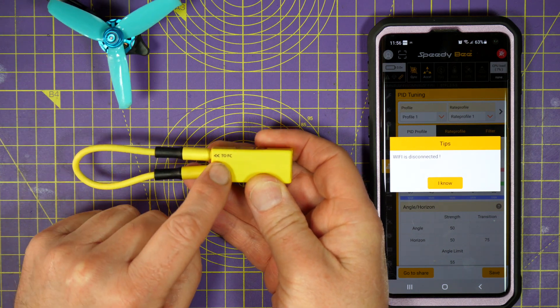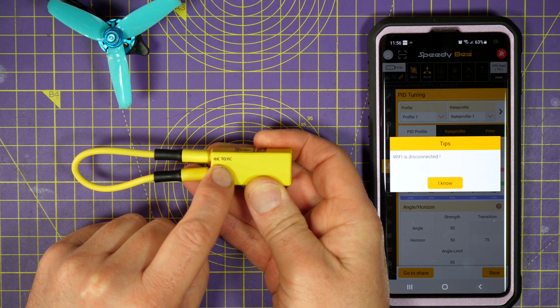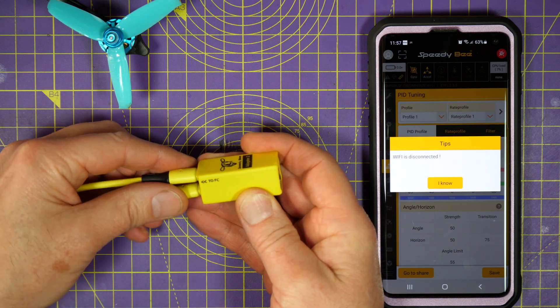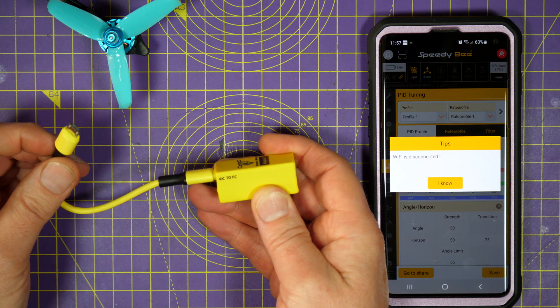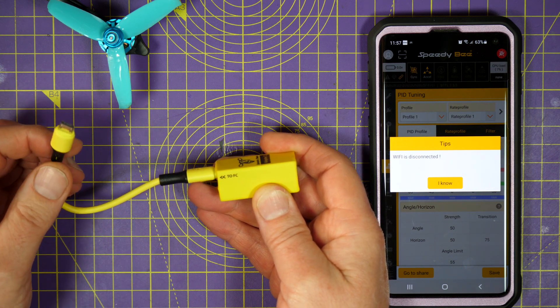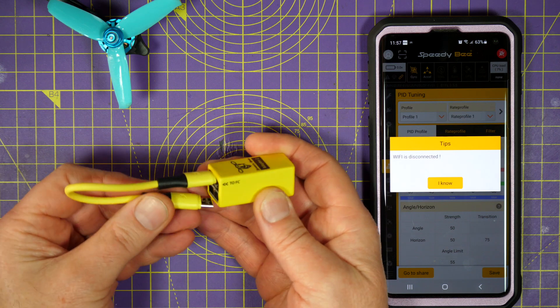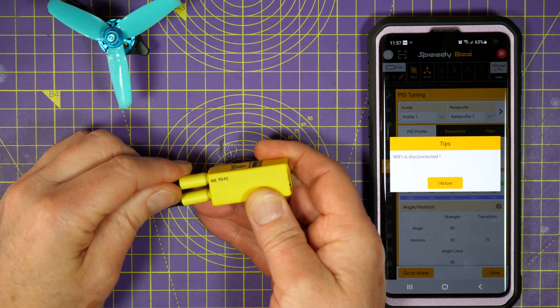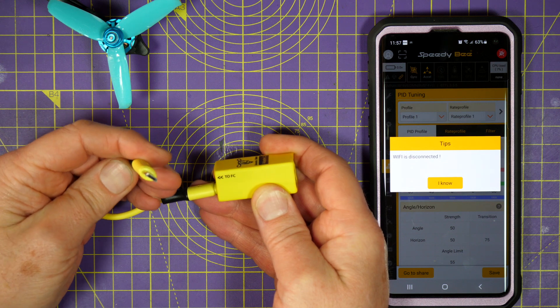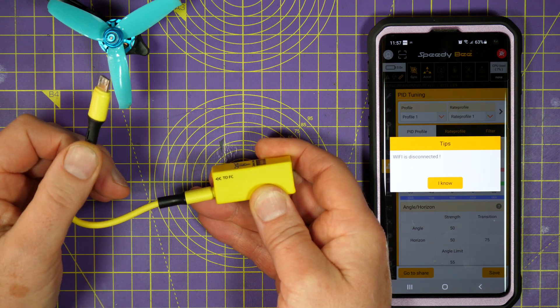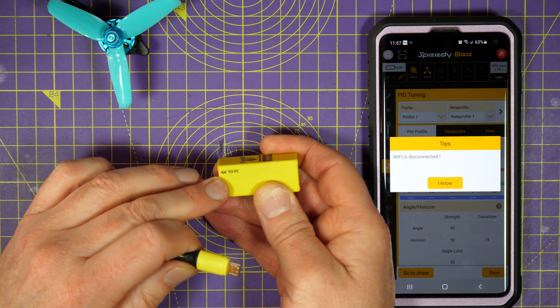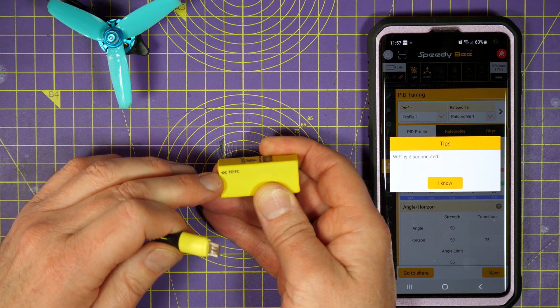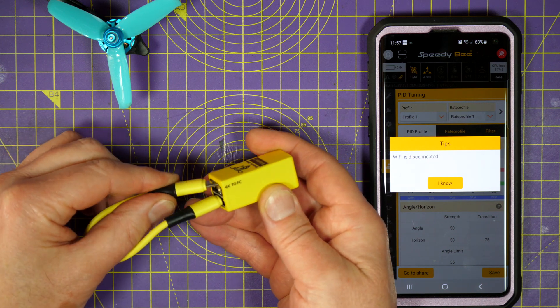And, I wrongly assumed that 2FC meant plug this end into the flight controller. Well, what it actually means is, unplug this and plug that into the flight controller. It's sort of obvious when you know about it. This top connector isn't connected to anything. It's just a nice, convenient place to plug this into, so you don't lose it.